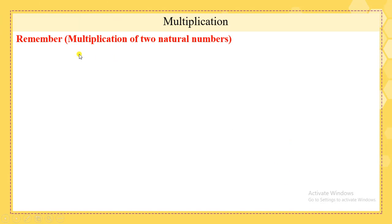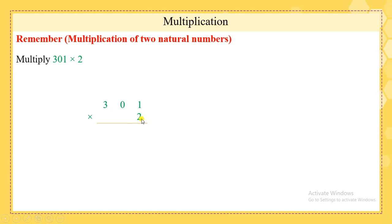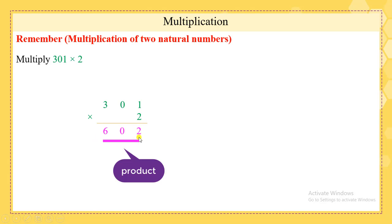We are going first to remember how we used to multiply two natural numbers. Multiply 301 times 2. The first step is to arrange the numbers above each other. Now multiply 2 by all the digits found above: 2 times 1 is 2, 2 times 0 is 0, and 2 times 3 is 6. The answer of our multiplication is called the product. Our product here is 602.